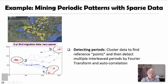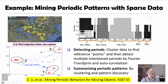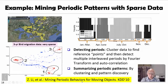You will find a few interesting reference spots. Once we detect periodicity based on those reference points, we can summarize such patterns in a periodic way because we find a period and find nice periodic patterns. This is an interesting study demonstrating that even from very sparse data, we can mine periodic behaviors for moving objects.